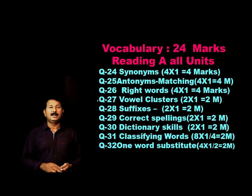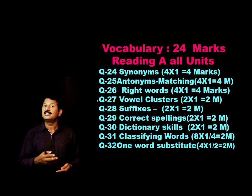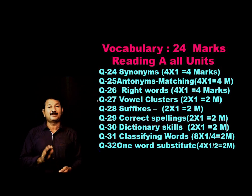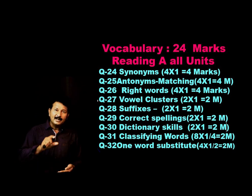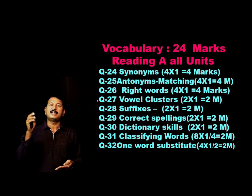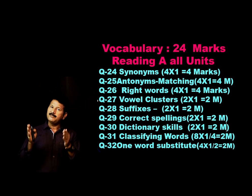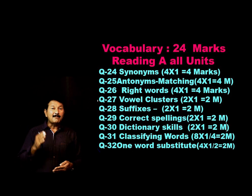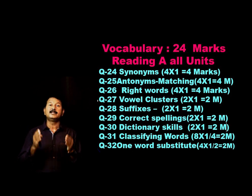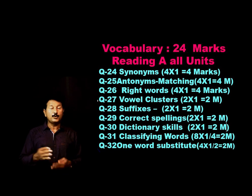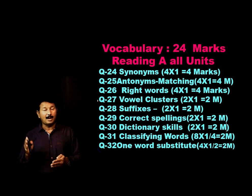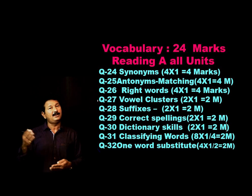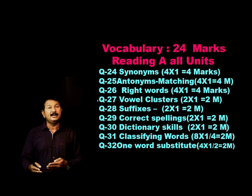Question number 30 is all about dictionary skills — this is the most easiest question. In the dictionary entry, you will see the parts of speech: noun, verb, adjective. Also the usage of the word and a sentence. Sometimes you will get a question about the root word — for example, 'apologize' has root word 'apology.' The partial speech is verb, and a synonym might be 'say sorry.' These types of questions will come.